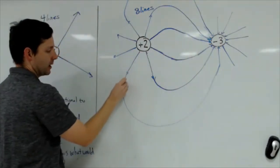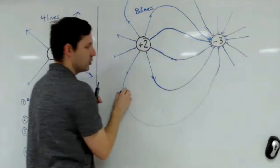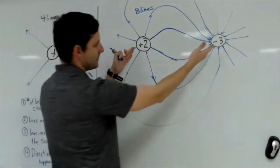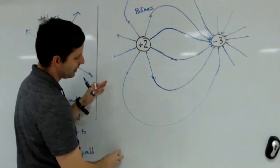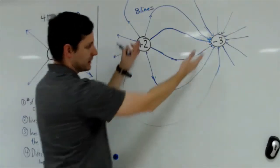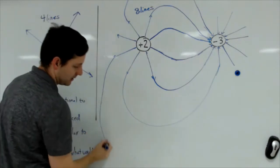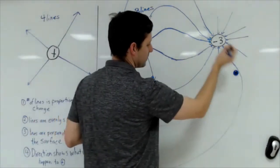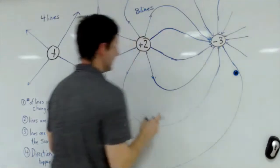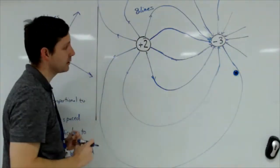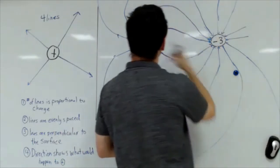If you put a particle near the plus two, it gets pushed away, but as it moves away it feels less from the two and starts to feel the pull of the negative three. When it's at the same distance from both, the negative three dominates because it has the larger charge. So the field lines bend around and come back into the negative three, spreading out more as you get farther away, where the field is weaker.